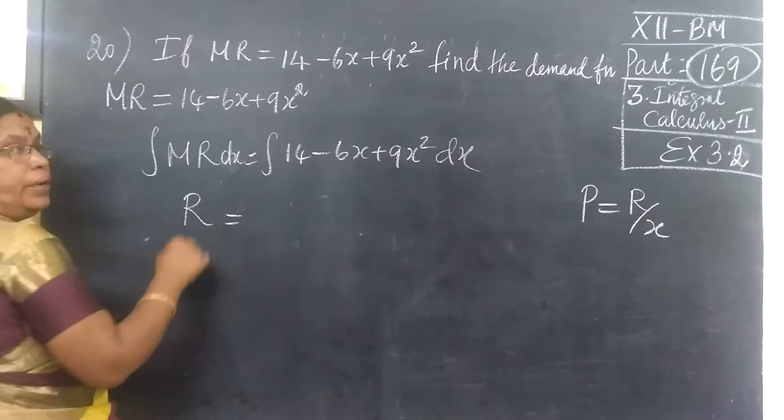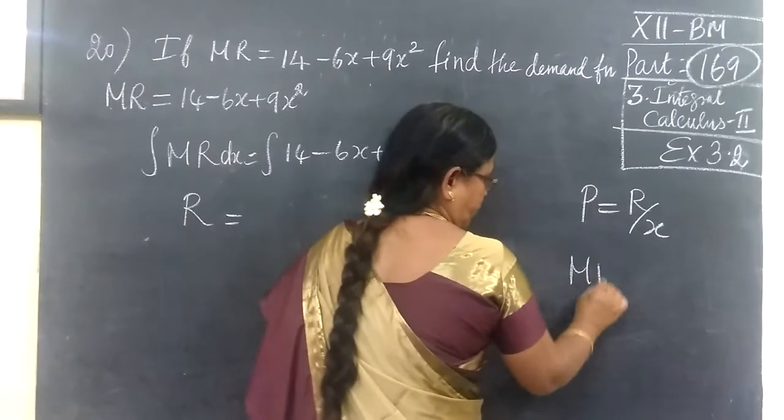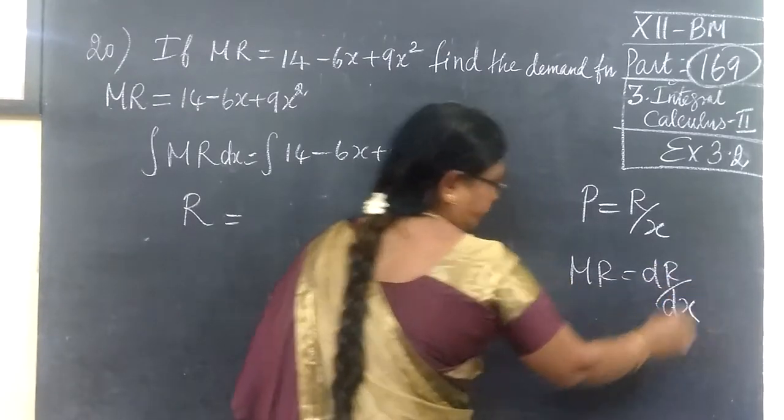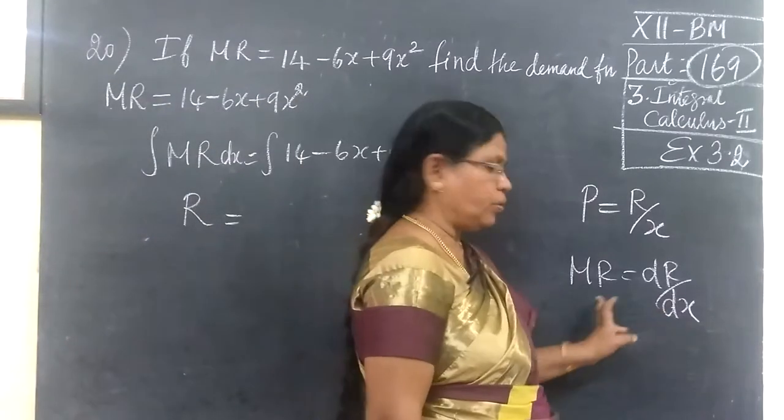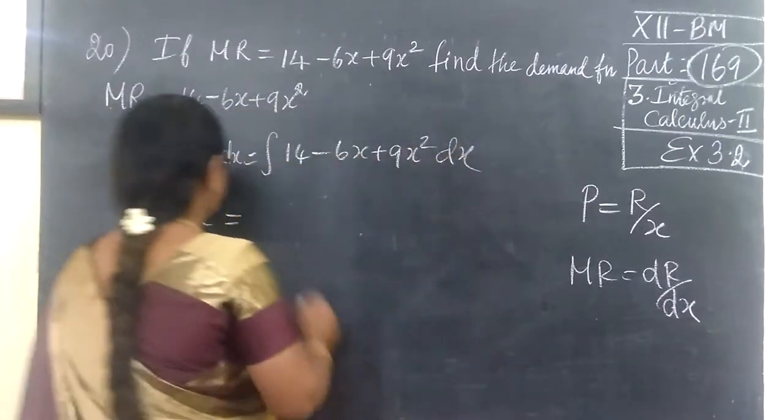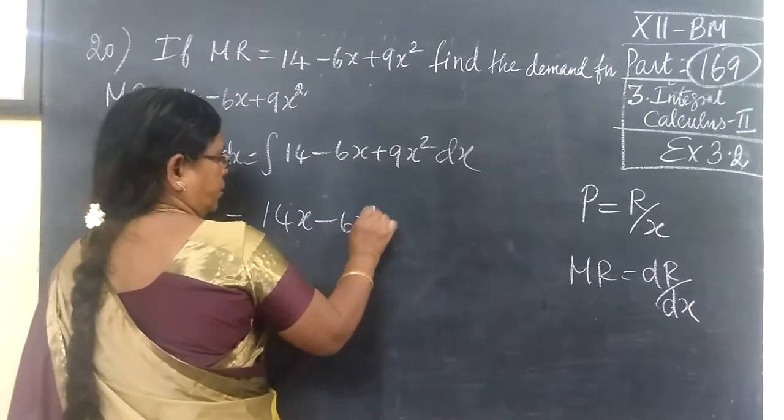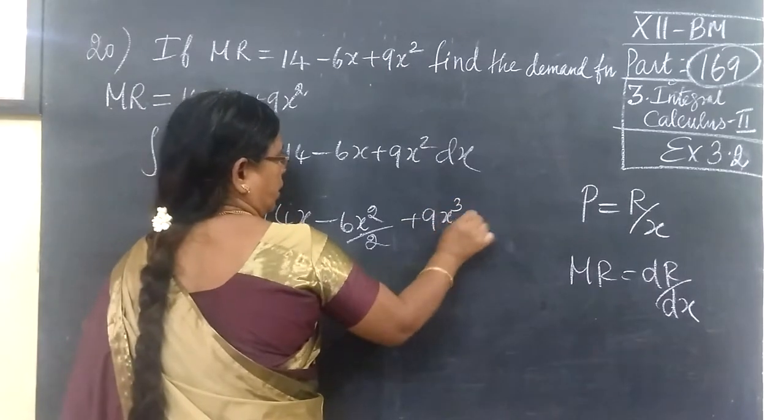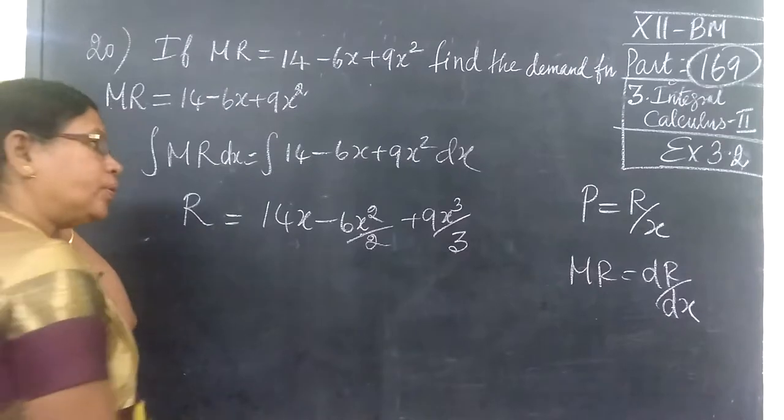Integrate MR dx is equal to R. This is the differentiation. So this is equal to 14x minus 6x squared by 2 plus 9x cubed by 3.